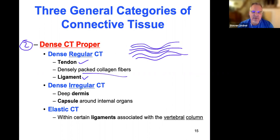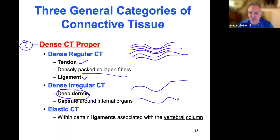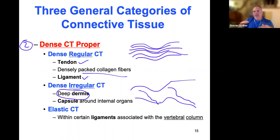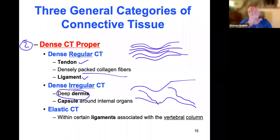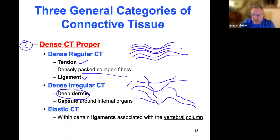Dense irregular connective tissue is found in the skin — particularly in the dermis, not the epidermis. The fibers are not perfectly parallel: think about being massaged, where your skin is manipulated in circles, diagonals, and multiple directions. Because the fibers aren't perfectly parallel, they don't rip and tear very easily. So we want dense irregular connective tissue in the skin, which is different from the dense regular connective tissue found in tendons.